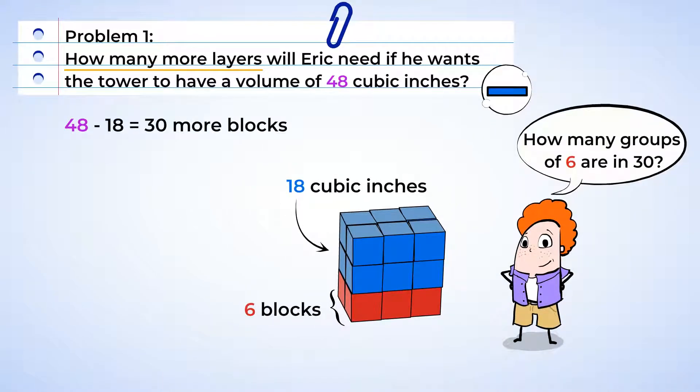So how many groups of six are in 30? Five. Eric will need to make five more layers if he wants a total volume of 48 cubic inches. Keep on building, Eric. You're almost there.